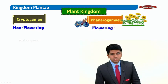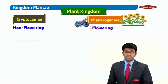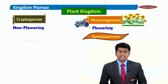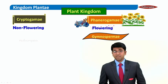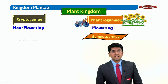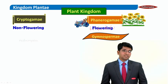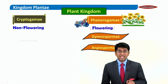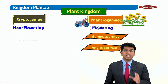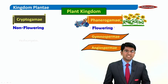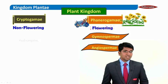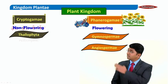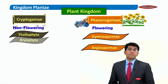Among seed-bearing plants, there are two possibilities. In gymnosperms, the seed is not enclosed within the fruit — examples include cycas and the Christmas tree. In angiosperms, the seed is enclosed within the fruit — examples include mango and guava. Cryptogams are further divided into thallophyta, bryophyta, and pteridophyta.